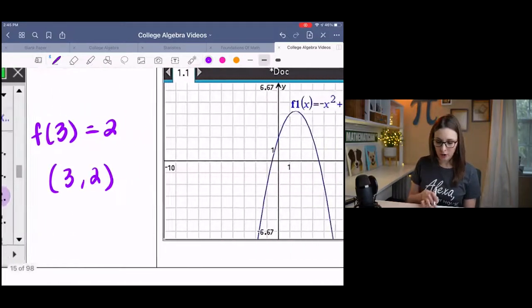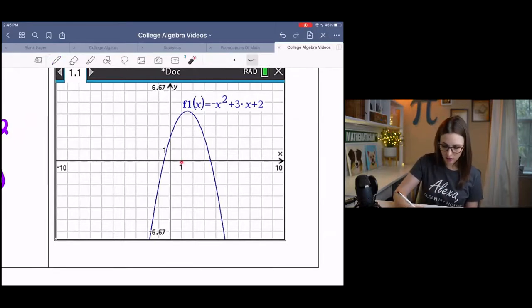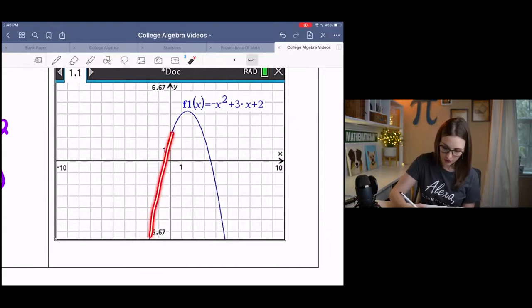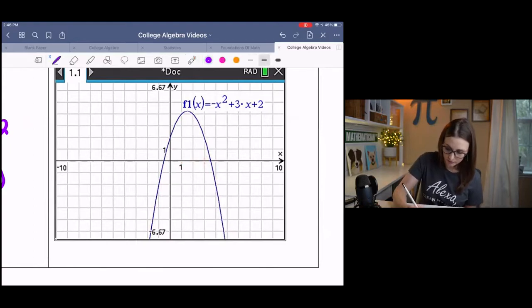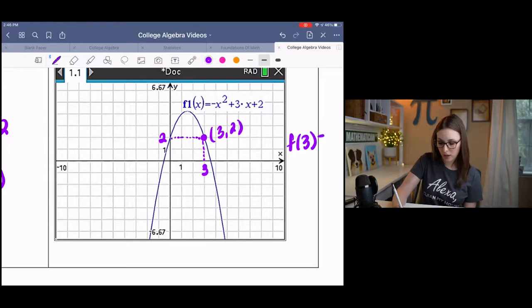You already kind of saw when I showed the calculator, but that's how you do that. If you're given a graph instead, and it's still f of 3, that means that we locate 3 on the x-axis: 1, 2, 3. We see where it's mapped to on the graph. This is my graph, this little upside-down u. When x is 3, it's mapped here, which is 2. So this point is 3, 2, which means that f of 3 is 2. These were the same functions, actually, I believe.